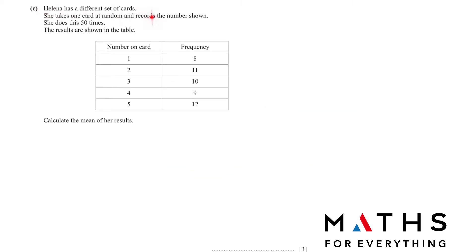Part C. Helena has a different set of cards. She takes one card at random and records the number shown. She does this 50 times. The results are shown in the table. So when the number on the card is 1, she picked it up 8 times. Total is 50. Calculate the mean of her results. When you have in this table form and you want to find mean, then we multiply our number on the card with the frequency. So 1 multiplied by 8 is 8, 2 multiplied by 11, 22, and then we add it. This will give us 156. To find the mean, the total we have, which is 156, we divide by the frequency. This will give us 3.12. There are many different types of mean questions, and you need to know how to find the mean for each.